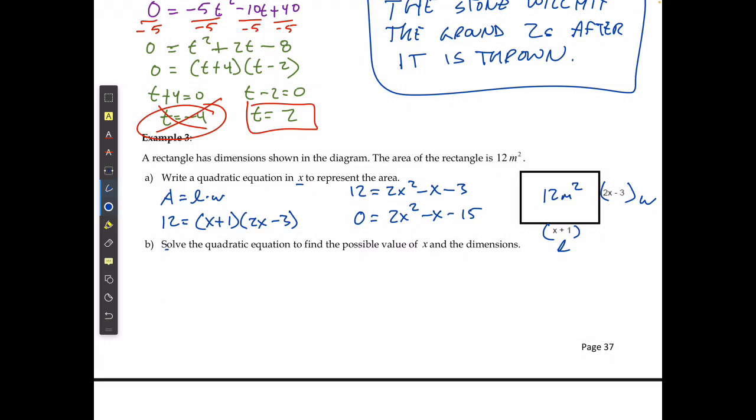If I'm going to solve the equation to find the possible values of x, then I'm going to state that 0 is equal to, if I multiply the 2 and the negative 15, I'm going to get negative 30. Two factors of that that add up to negative 1 are going to be positive 5 and negative 6.